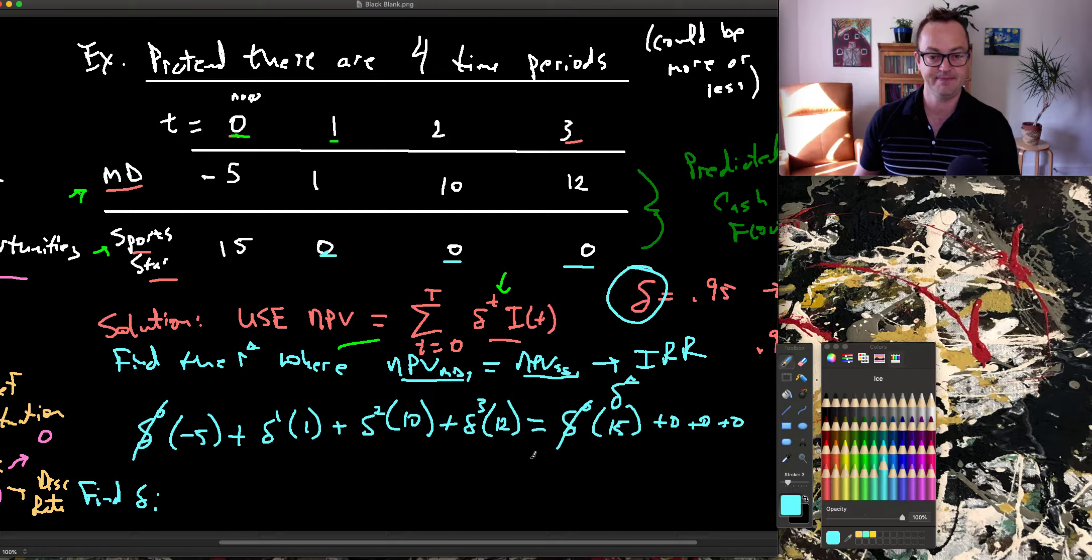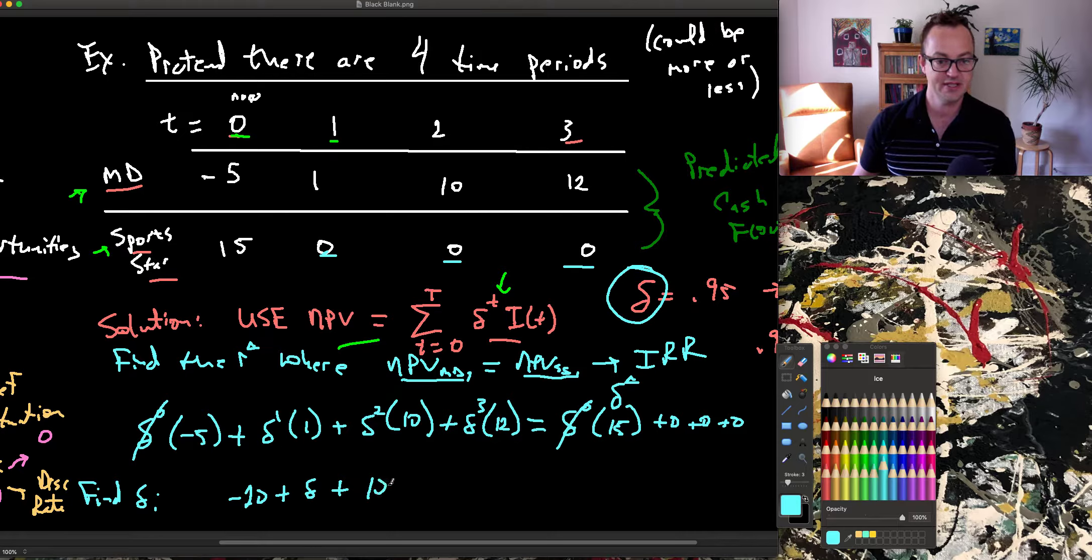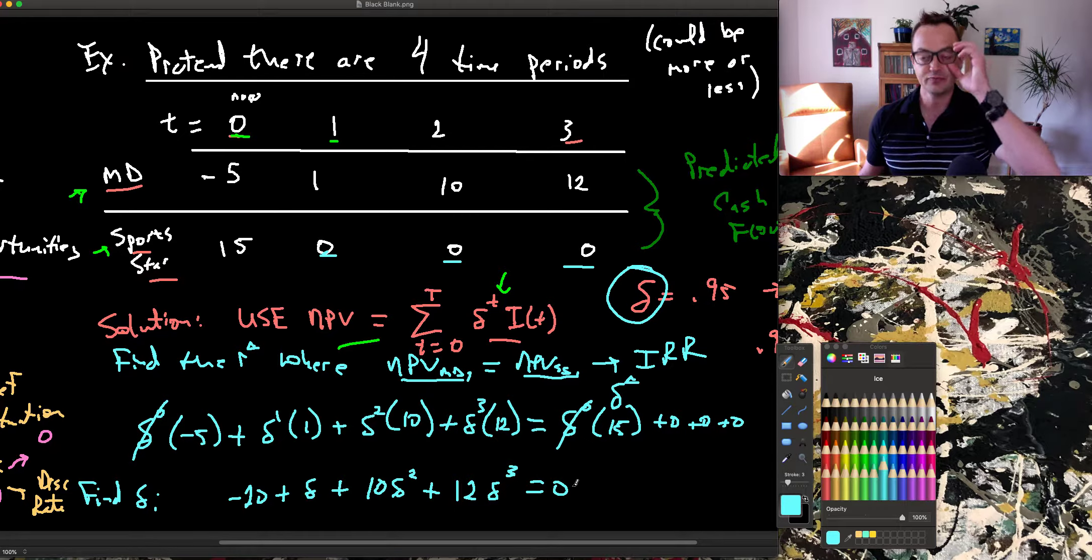I do a bit of algebra, and I'm going to bring this 15 over. So if I subtract by 15 on each side, I get minus 20 plus delta plus 10 delta squared plus 12 delta cubed is equal to 0.